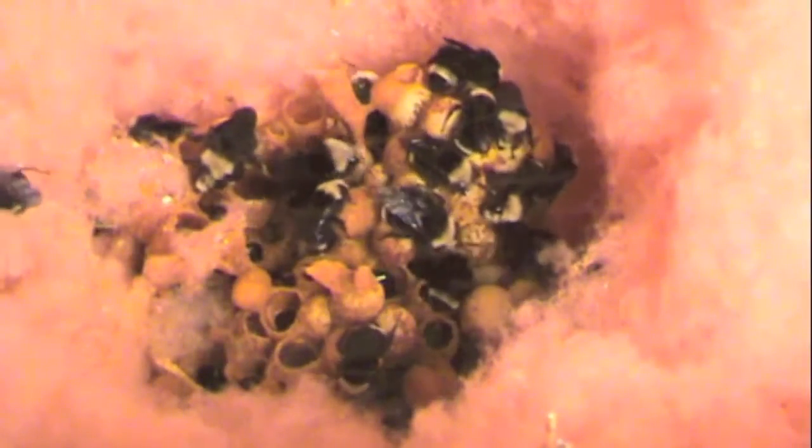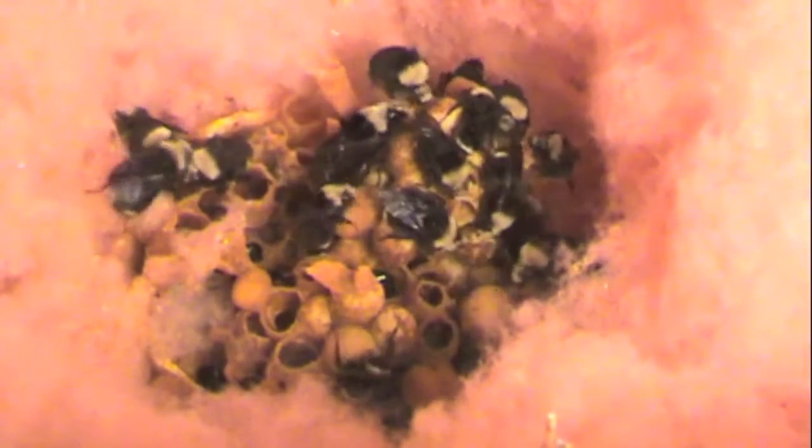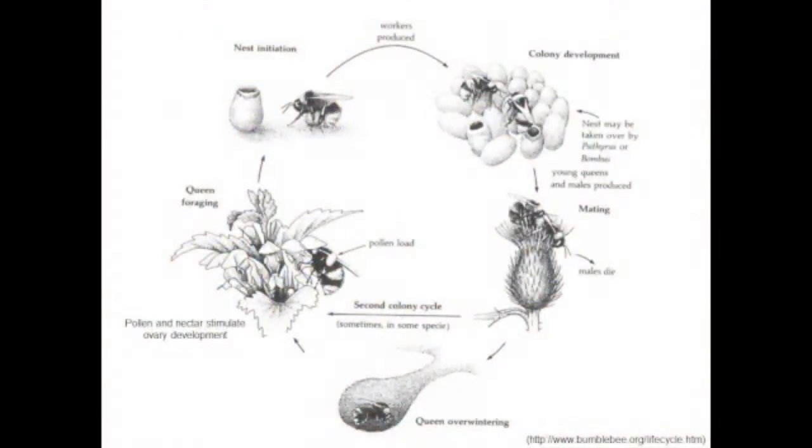This is a candid look inside of a Bombus vosnesenskii bumblebee nest. This diagram displays the typical life cycle of a bumblebee nest.